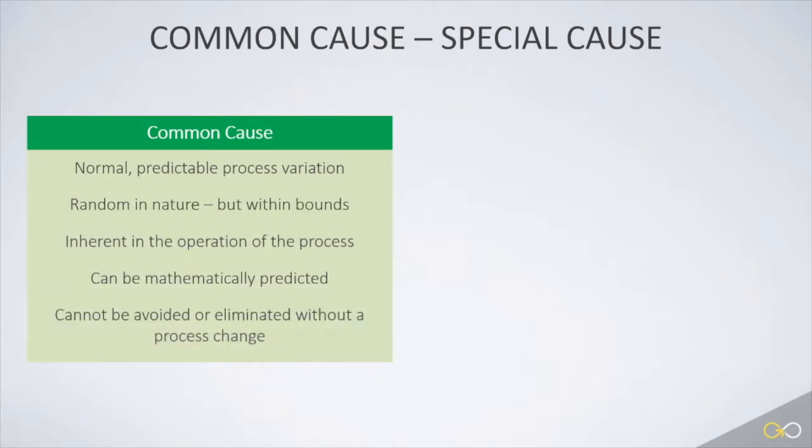Common cause is normal variation. It's random in nature, but within normal bounds for the process. Because of that, it is predictable. Every process has some level of common cause variation that is inherent in the process design. You cannot change this type of variation without a fundamental change to the process.